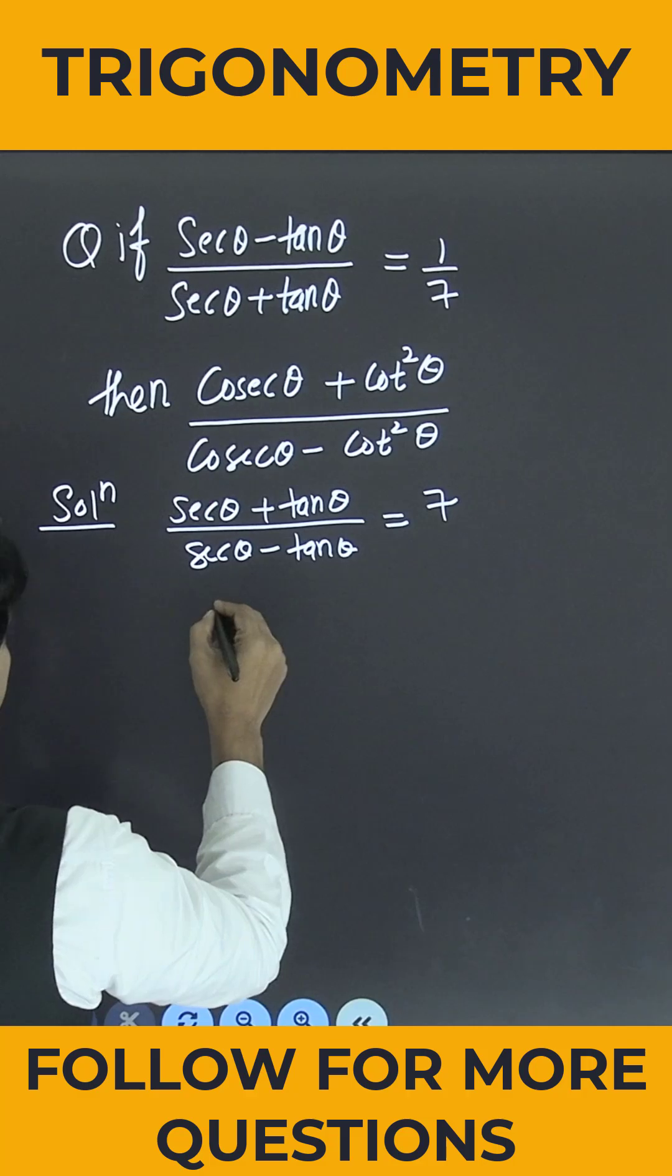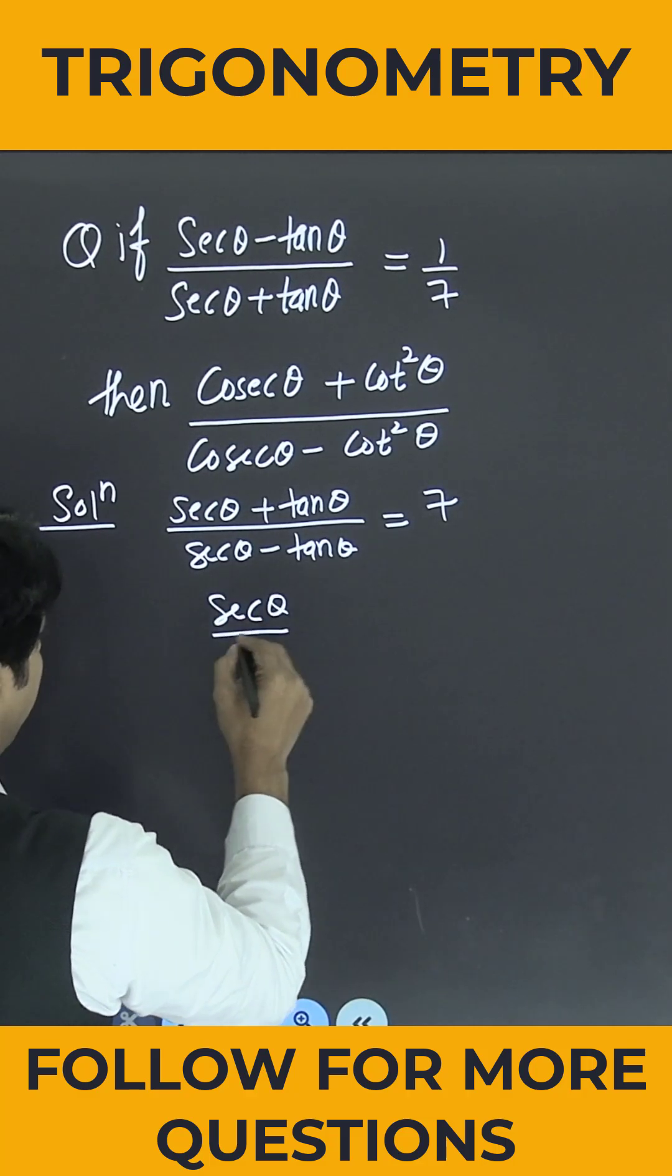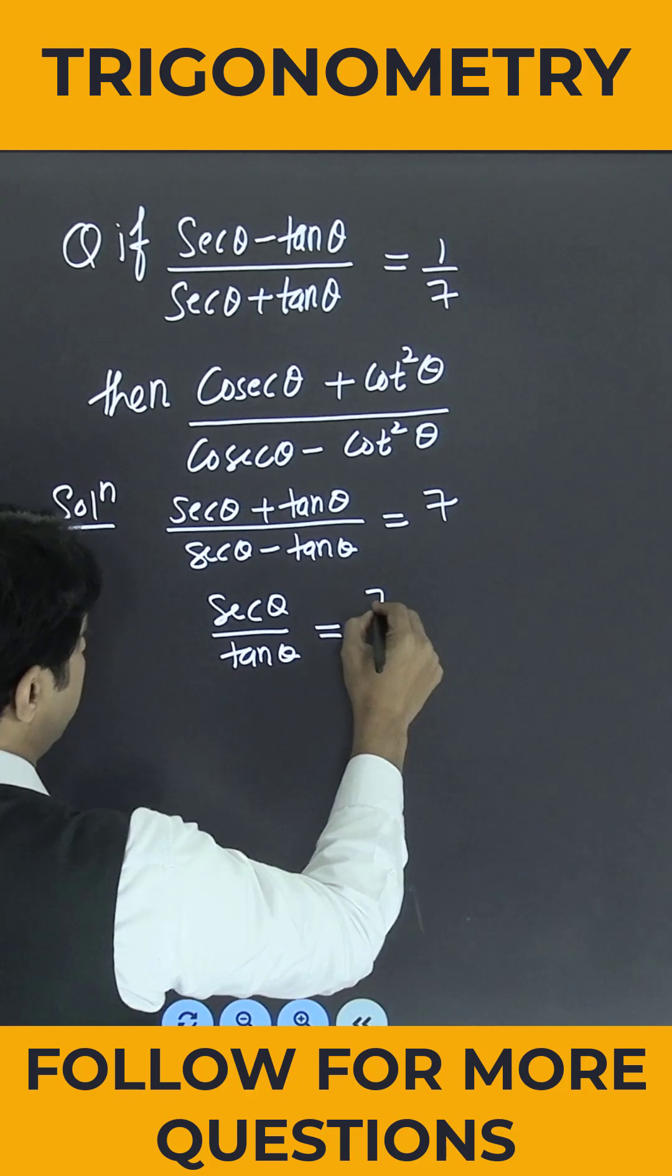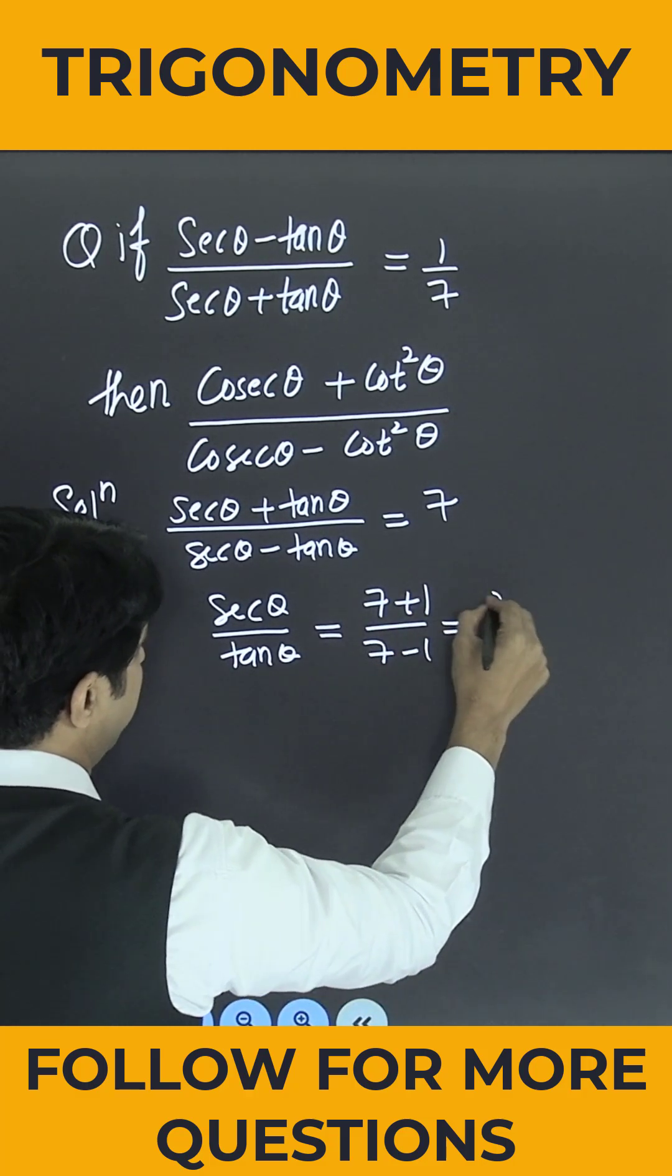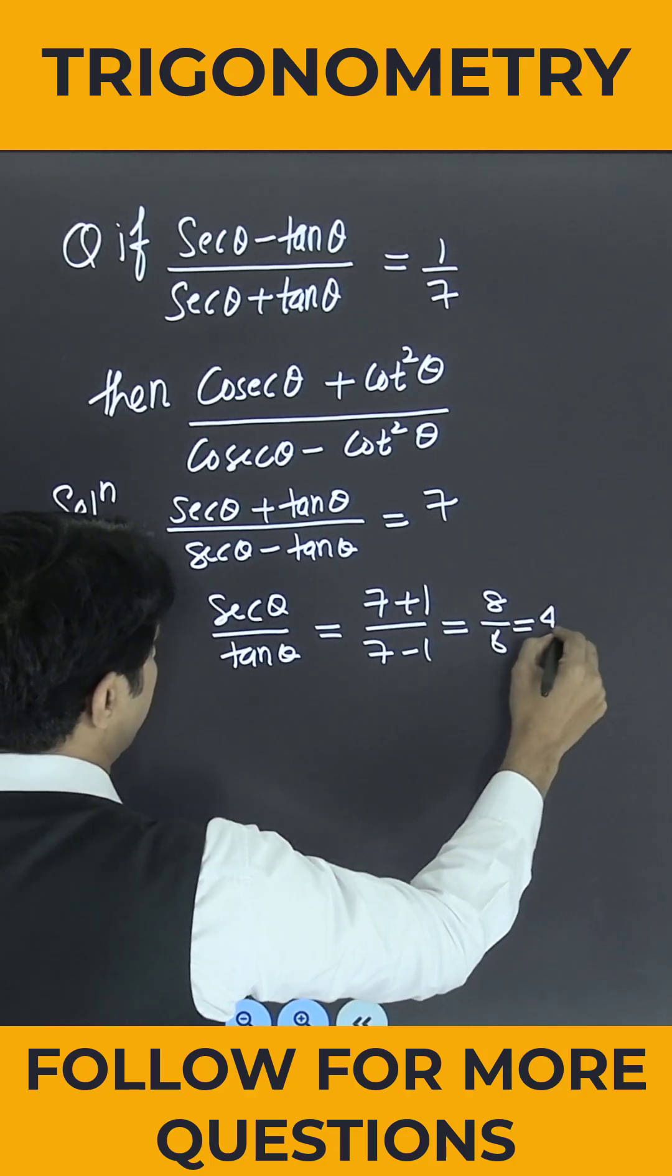So can I say sec θ divided by tan θ is nothing but 7 plus 1 divided by 7 minus 1? So it will be 8 by 6, which is nothing but 4 by 3.